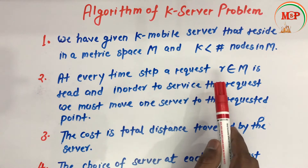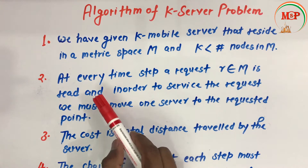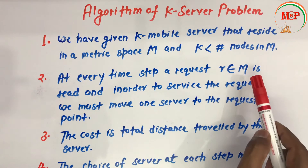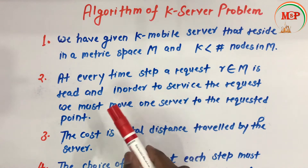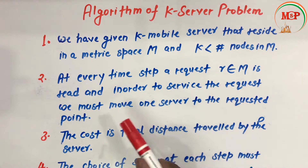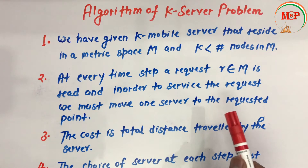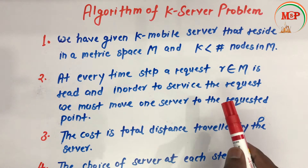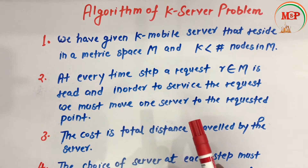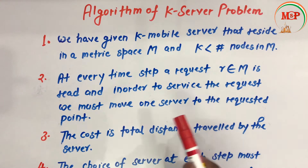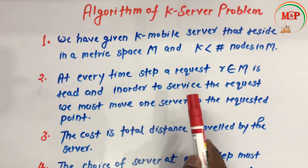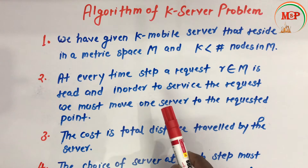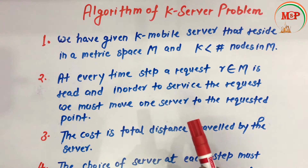The second point is: at every time step, a request r belonging to M is read. That is, at every time step there is a request r which belongs to the same metric space, and that request is read. In order to service the request, we must move one server to the requested point.